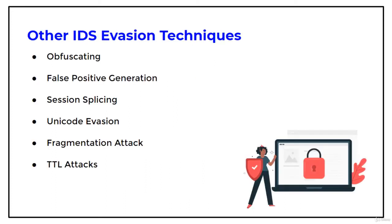There are other attacks as well — I will give a brief introduction to each. The next attack is obfuscating. Obfuscating is an IDS evasion technique used by attackers to encode the attack payload in such a way that the destination host can decode the packet but the IDS cannot.